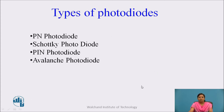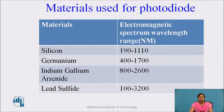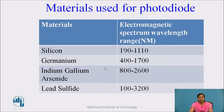There are four types of photodiode: PN photodiode, Schottky photodiode, PIN photodiode, and avalanche photodiode. The materials used for manufacturing photodiodes and their respective wavelengths in the electromagnetic spectrum include silicon, germanium, indium gallium arsenide, and lead sulfide.